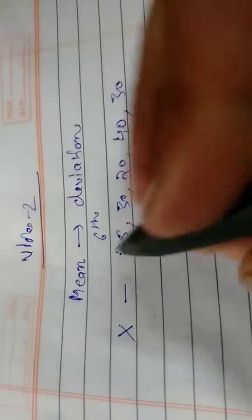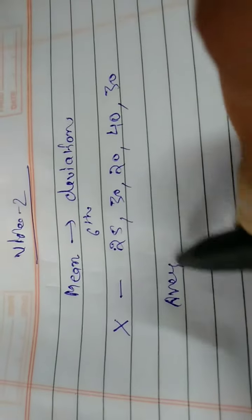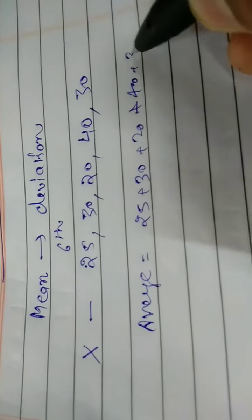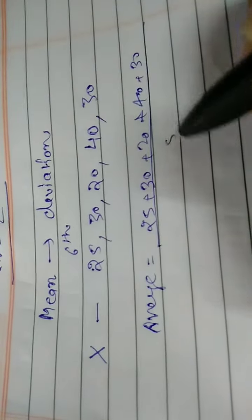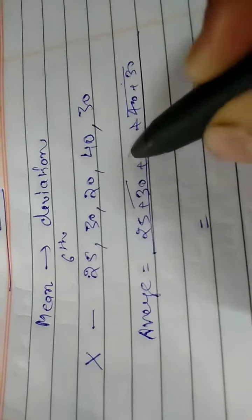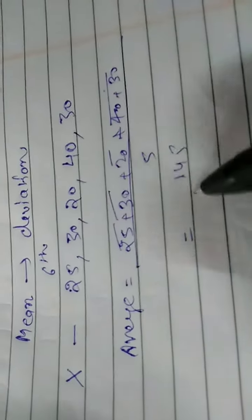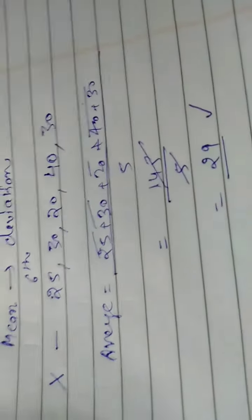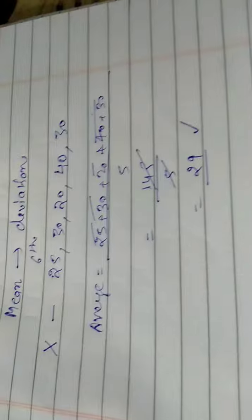So you calculate the average weight. Let's say average weight: 25, 30, 20, 40, 30, divided by 5. Adding: 40, 30, 70, 100, 145. Divide by 5: 29. So what is the mean? 29. Very good, outstanding.